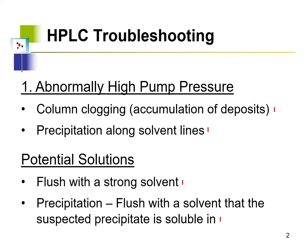The solution to clogging is to flush the column and lines with solvents that can dissolve the blockage species. If salt precipitation is the issue, we flush with water since salt dissolves in water very well. If the contaminant is dissolvable in an organic solvent, we flush with that organic solvent — it could be acetonitrile or methanol and so forth.